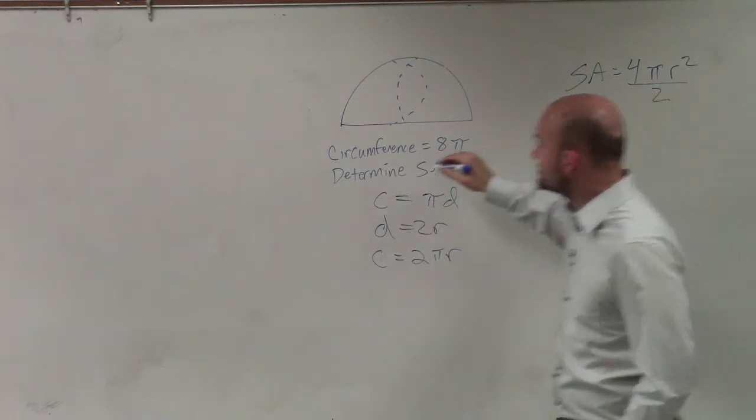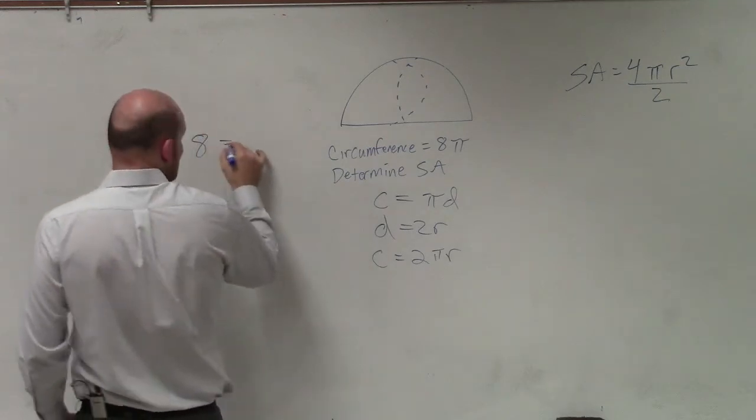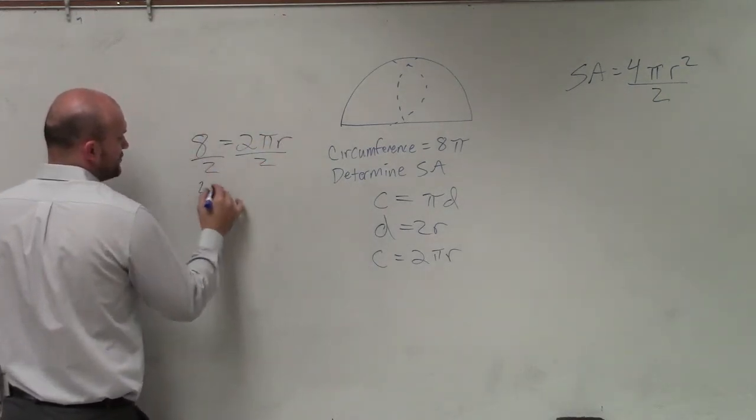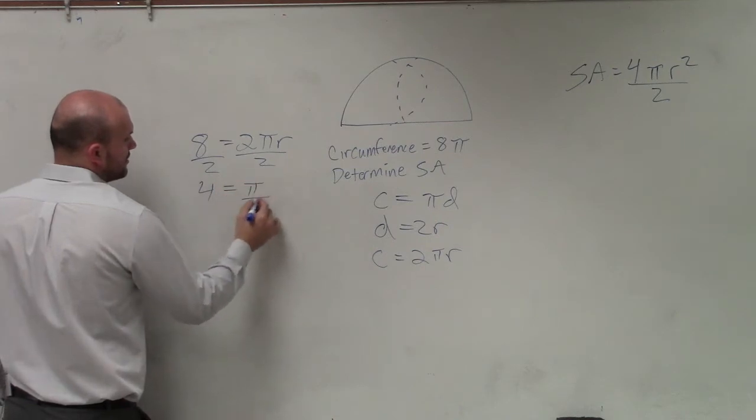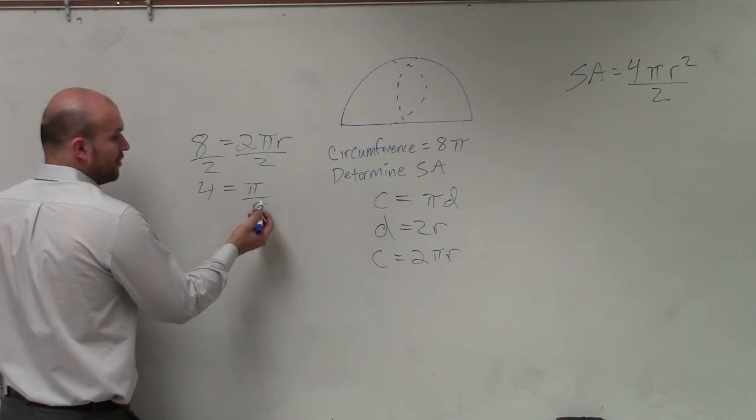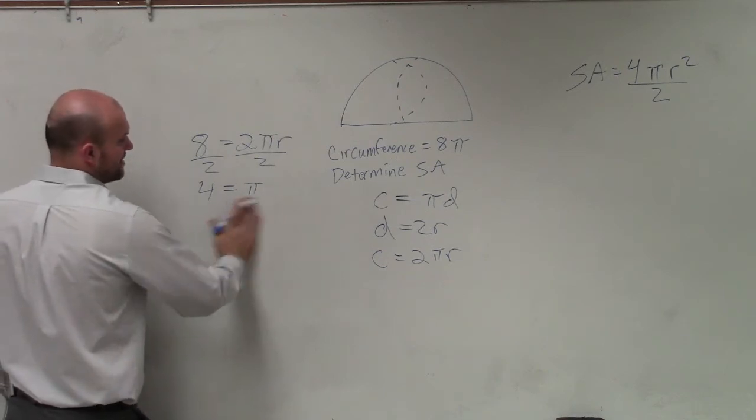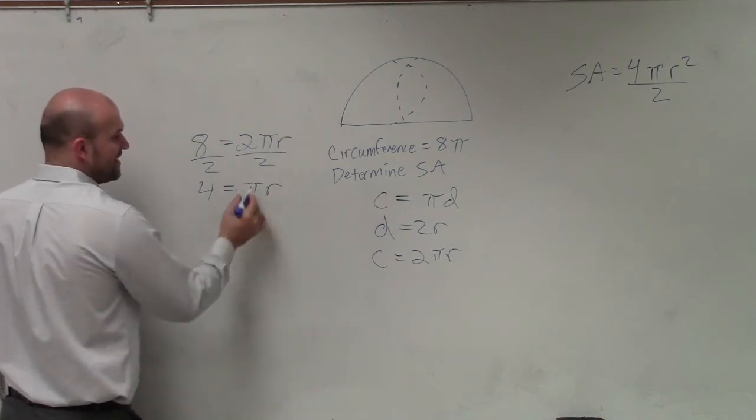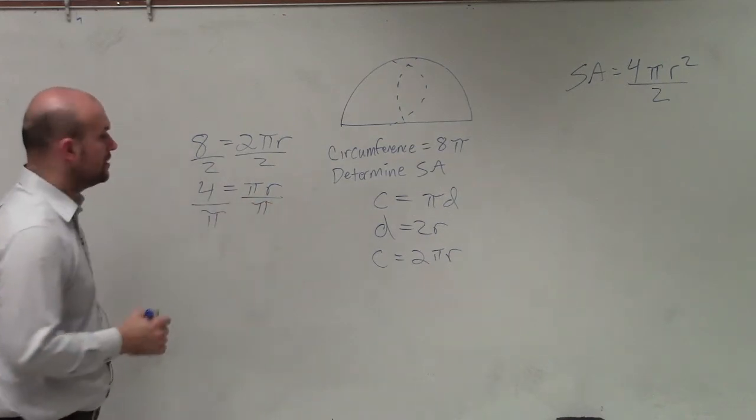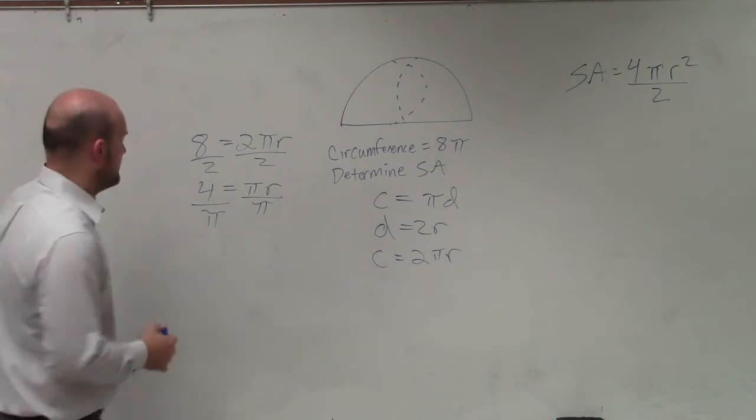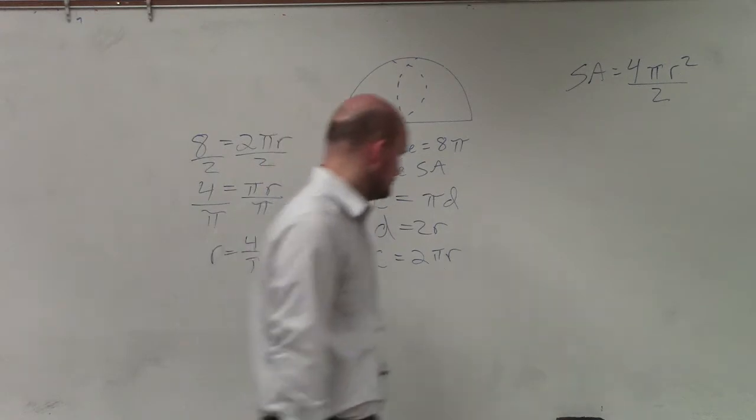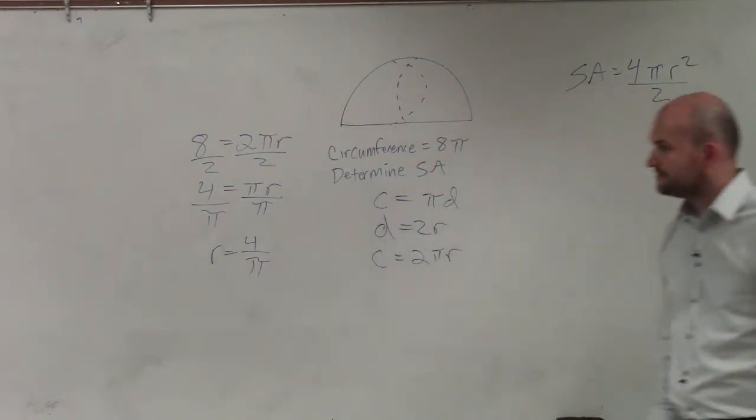So all I'm going to do, Imani, is I'm just going to say, 8 equals 2πr. Divide by 2, divide by 2, 4 equals π times r. OK? Therefore, now, I'm sorry, π times r, to find r, I just divide by π. Divide by π, thank you.